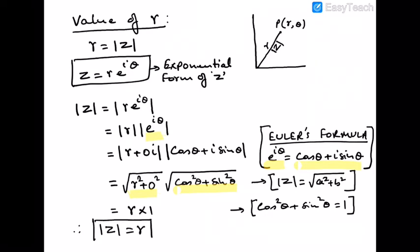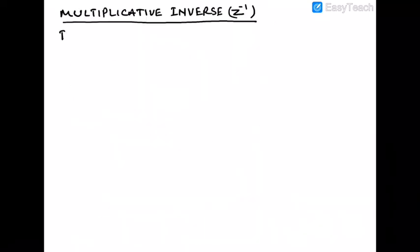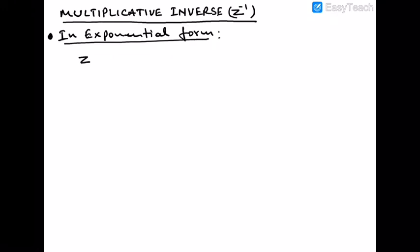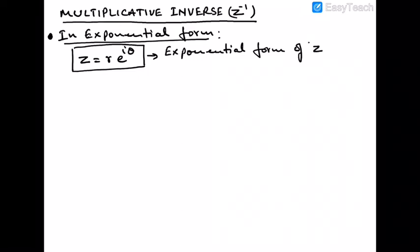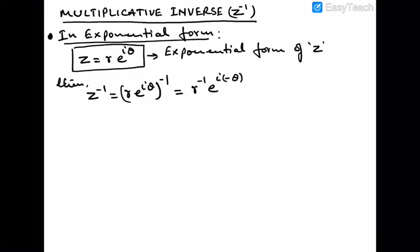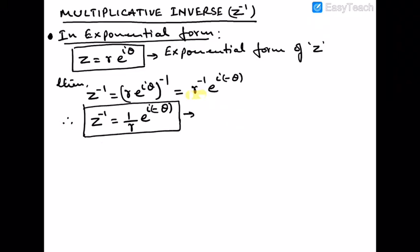So we confirm that |z| = r, or r = |z|. Now let's find the multiplicative inverse of a complex number in exponential form. Given z = r·e^(iθ), take the inverse of both sides: z⁻¹ = (r·e^(iθ))⁻¹ = r⁻¹·e^(−iθ). Therefore z⁻¹ = (1/r)·e^(−iθ).